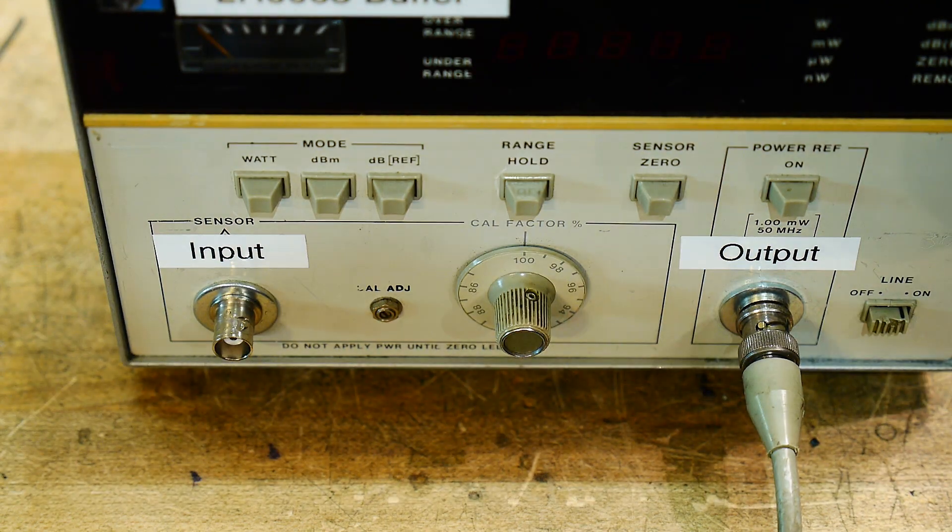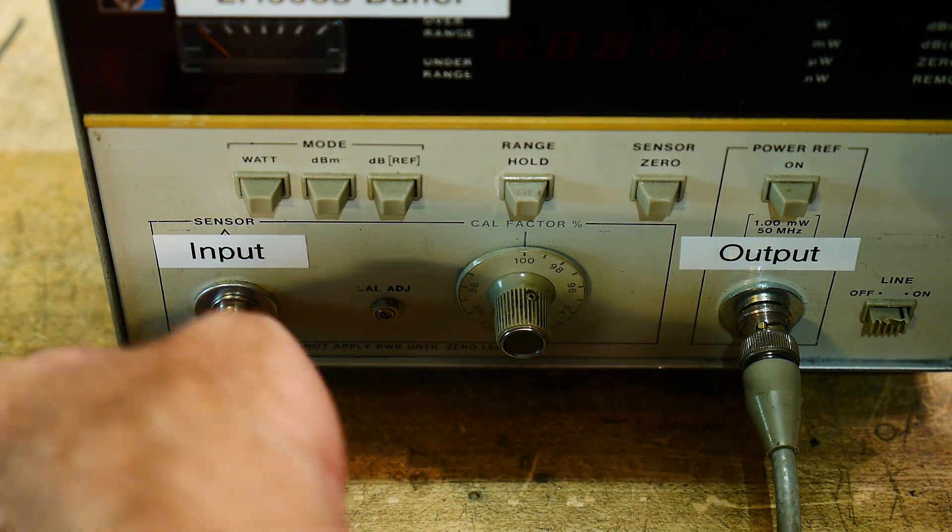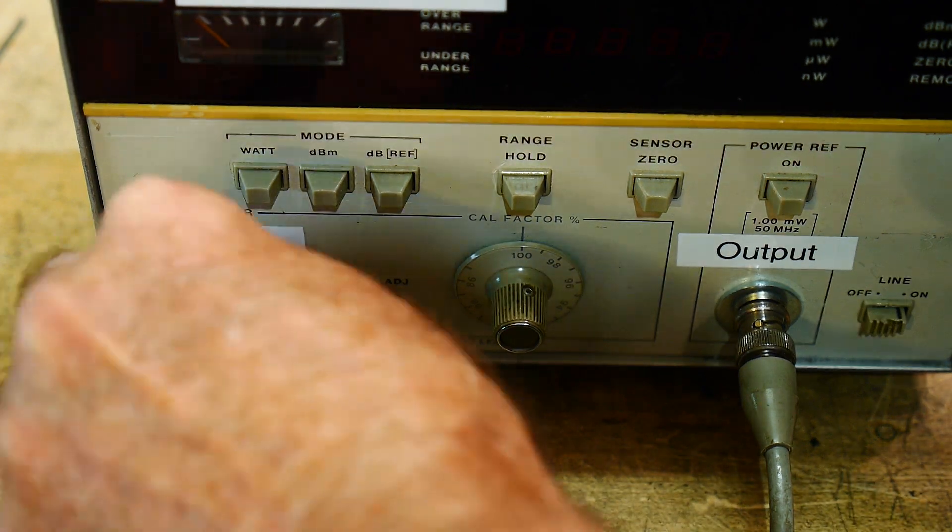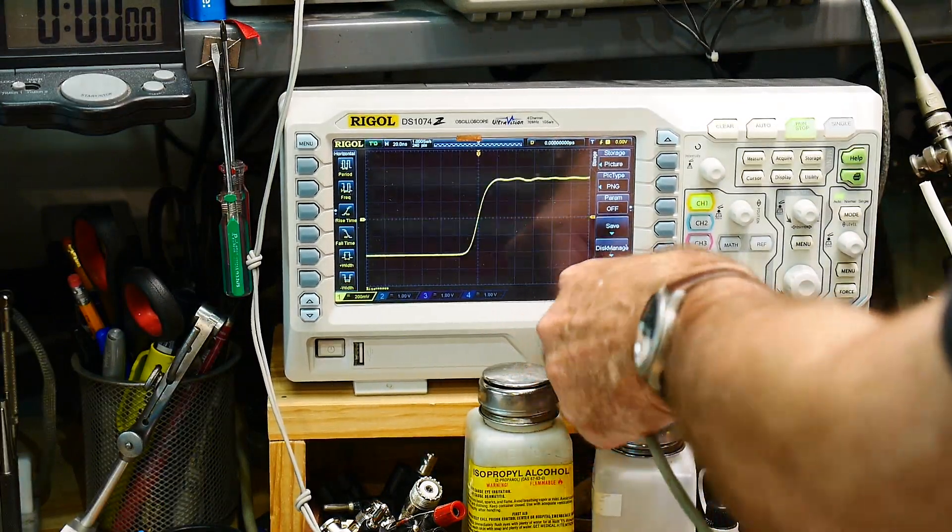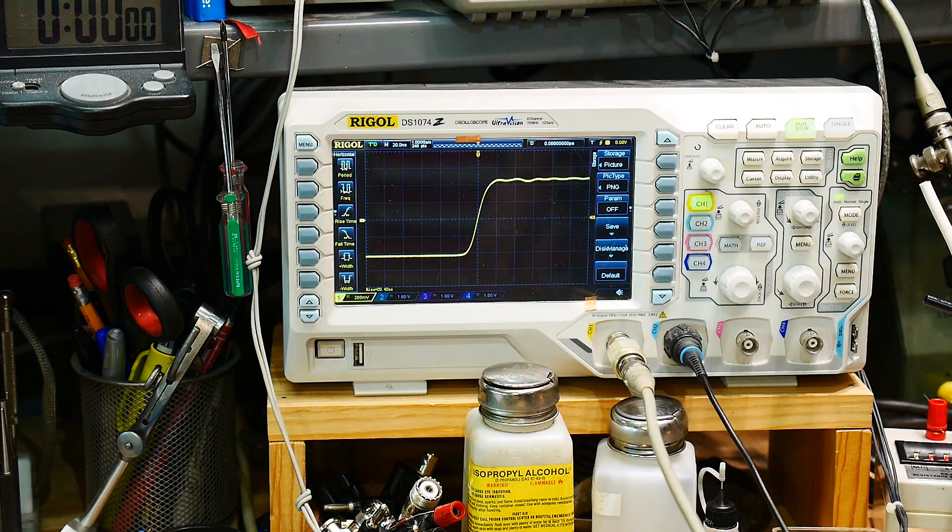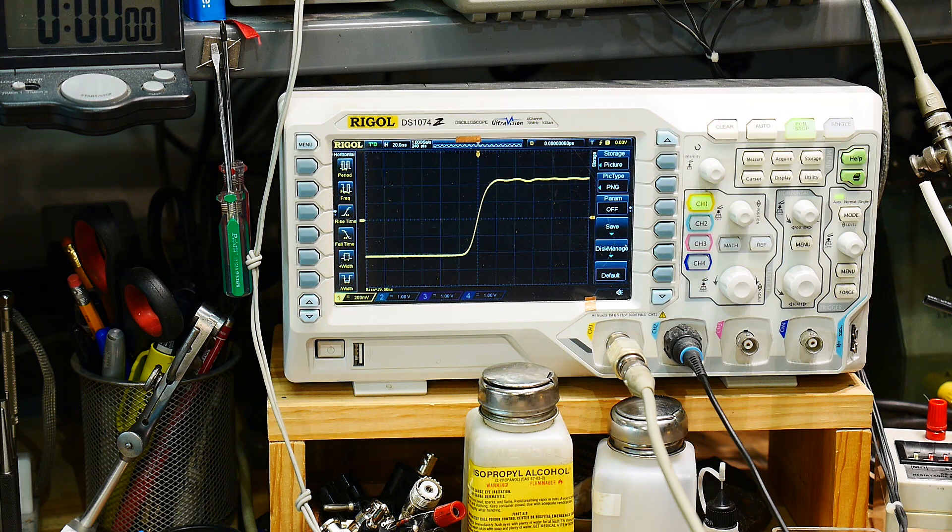All right, so let's see here. Let's take that and put it on the input, and then we'll take the output, put that in the scope. And yeah, a little tiny bit of ripple, a little tiny bit of ripple. Otherwise, it looks pretty good.